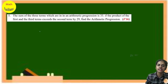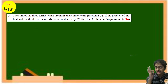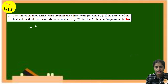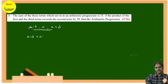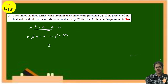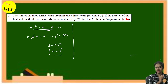Next question: the sum of 3 terms in AP is 33, and the product of the first and third terms exceeds the second term by 29. Whenever 3 terms are in AP, take them as (a−d), a, (a+d). From the sum: (a−d) + a + (a+d) = 33, so 3a = 33, giving a = 11.